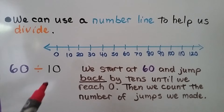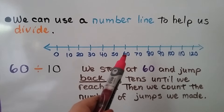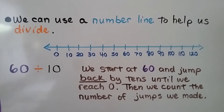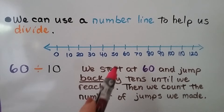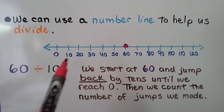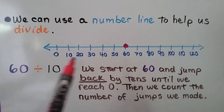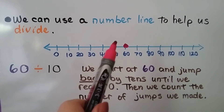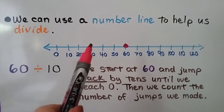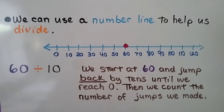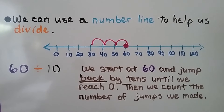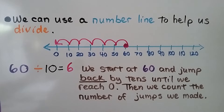We can use a number line to help us divide. Here we have 60 divided by 10. We start at 60 and jump back by tens until we reach zero, then count the number of jumps. Our number line is in increments of 10, so we jump back one tick mark at a time: 1, 2, 3, 4, 5, 6. We made 6 jumps, so 60 divided by 10 is equal to 6.